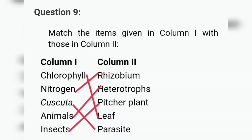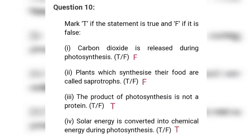Question nine: match the items in column one with column two. Chlorophyll matches with leaf, because chlorophyll is found in the leaf. Nitrogen matches with Rhizobium, as Rhizobium converts nitrogenous gas. Cuscuta is an example of a parasite. Animals are heterotrophs. Insects relate to pitcher plant.